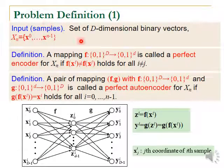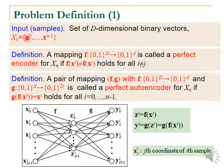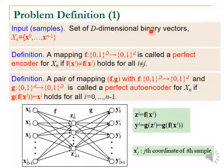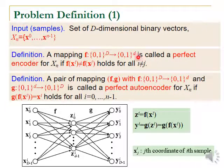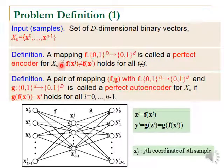Next, I want to define our models and problems. First, we assume that the input is a set of n d-dimensional binary vectors — the first vector, second vector, third vector, and so on. So we have n binary vectors where each vector is in d-dimensional binary space. Then we define two important concepts: perfect encoder and perfect autoencoder. A mapping function f from this domain to another domain is called a perfect encoder for this set of samples if any two different vectors are mapped to different vectors.